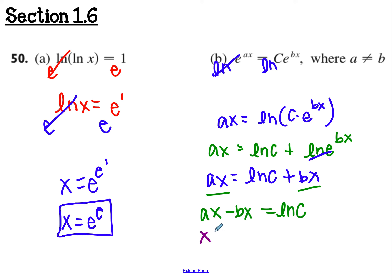From here to get x by itself, I'd factor out an x. Then I would divide both sides by a minus b. So I'd have x equals ln of c divided by a minus b.